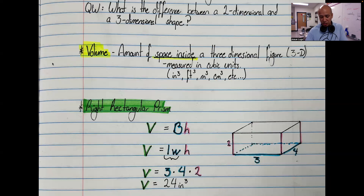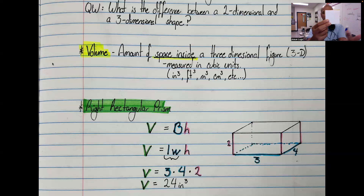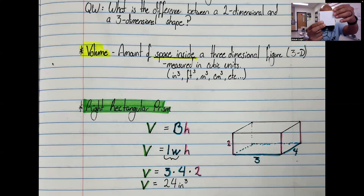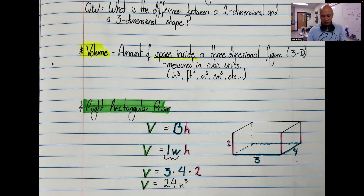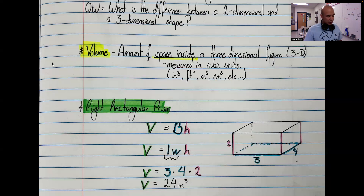Let's begin with a two-dimensional shape like a square. When you see a square, you only have two dimensions — you have length and width. But then you also have depth to the shape. Not only do you have the horizontal and vertical, but you also have depth going in a third direction. So that's where we get shapes like cubes and rectangular prisms, like boxes. That's what makes them three-dimensional shapes.